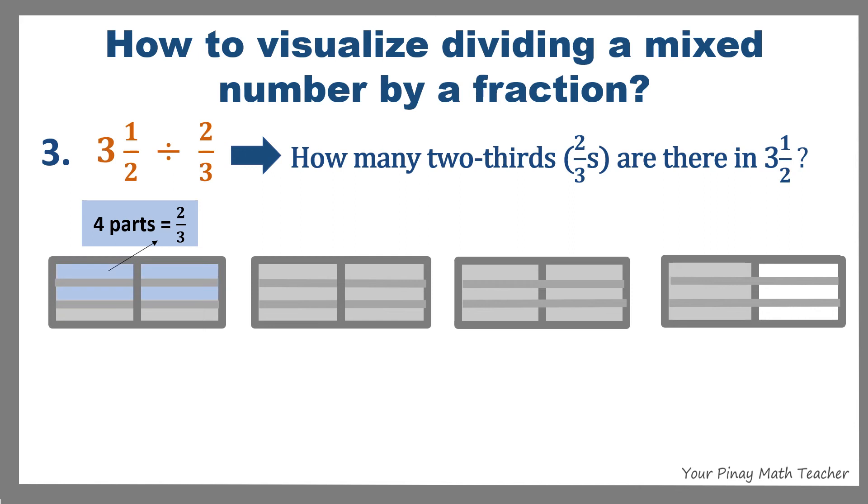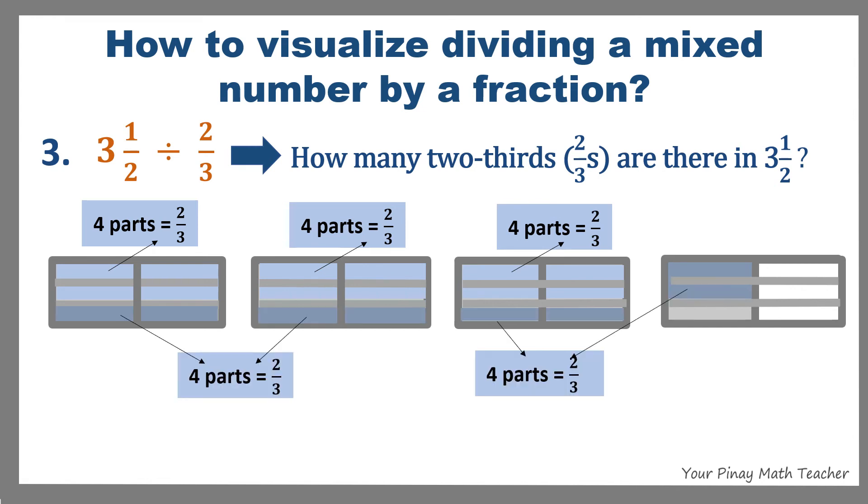So let's count how many groups of 2 thirds are there in 3 and 1 half. So we have 1, 2, 3, 4, 5. And since we have a remaining 1 shaded part, and since a group of 2 thirds consists of 4 equal parts, then the remaining is equivalent to 1 out of 4 or 1 fourth. So 3 and 1 half divided by 2 thirds is equivalent to 5 groups of 2 thirds plus the remaining 1 fourth.